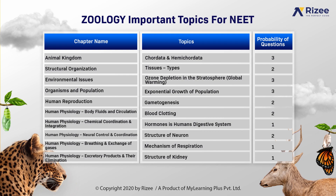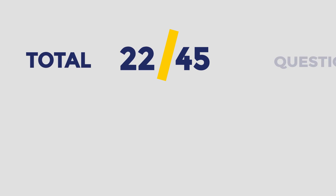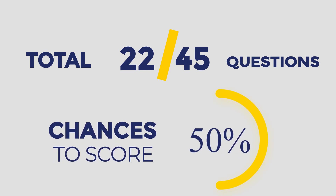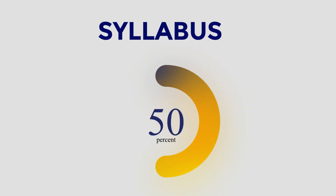In human physiology excretory products and elimination, the important topic is the regulation of kidney function. Probability of questions asked are 1. So if you see in zoology, total 22 questions of 45 are being given, wherein more than 50% chance of scoring, as 50% syllabus is covered from these 10 important topics.